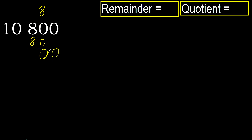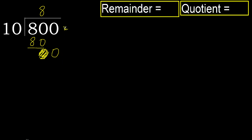Next. Bring down 0. 0 is less, therefore next. There is no next number, therefore finish. Always complete with 0. Complete because we finish with this number.